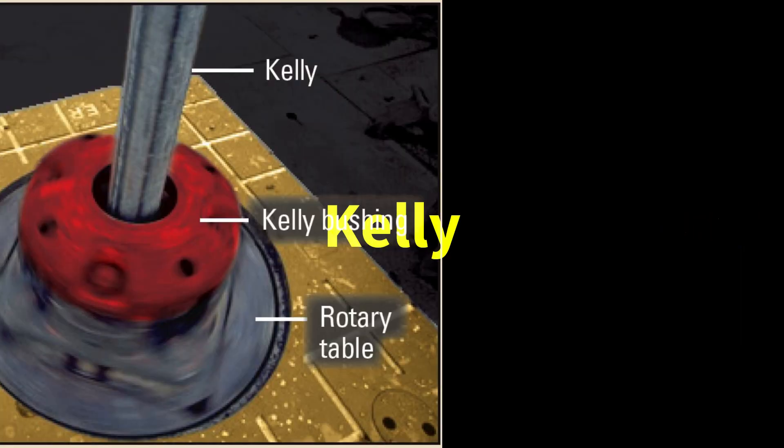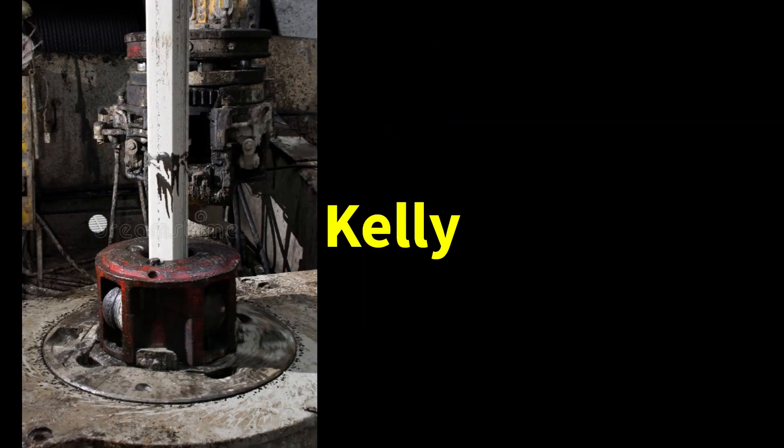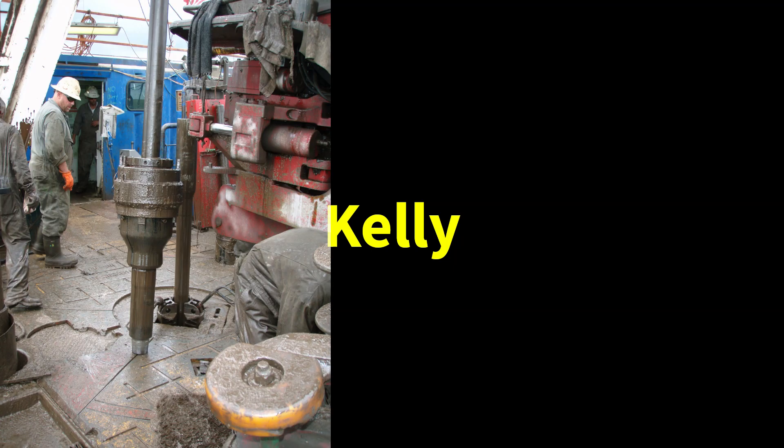The kelly is a long square or hexagonal pipe that transfers rotary motion from the rotary table to the drill string. It also allows for vertical movement of the drill string during tripping operations.